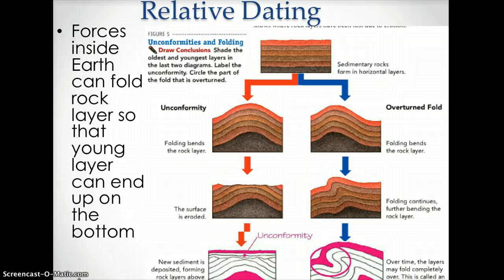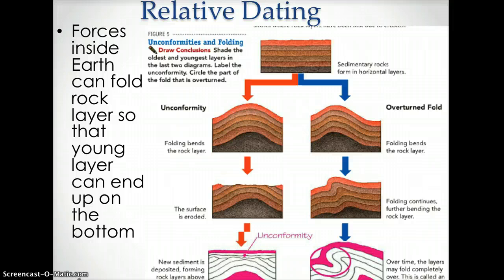The left side of this image demonstrates an unconformity. Erosion caused the rock layers on top to no longer appear, so when new layers were added, it would be difficult to date them. The right side of this image demonstrates folding. The folding of rock caused the layers to twist and appear to be out of order.